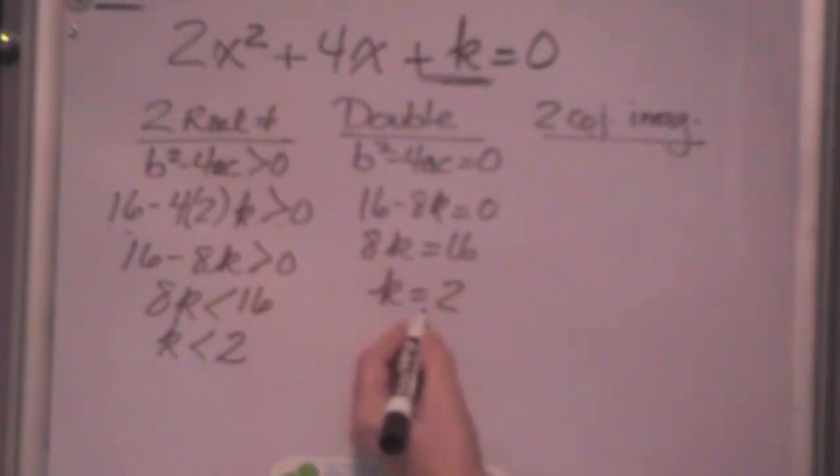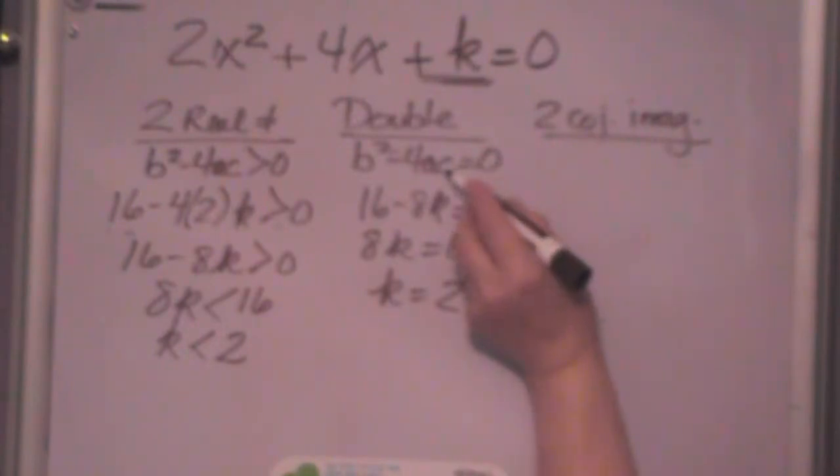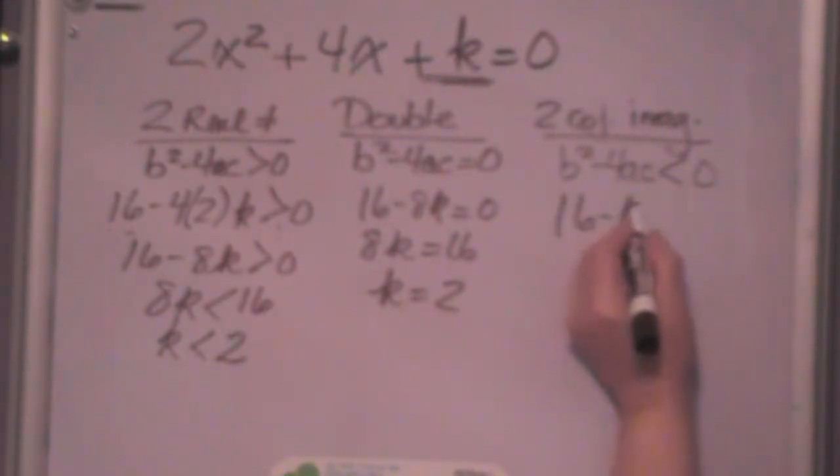Do I have less than 2? Equal to 2? What do you suppose it's going to be over here? I got a feeling it's going to be greater than 2, but let's figure it out. To have imaginary roots, this has got to be less than zero. b squared minus 4ac is less than zero. So that means 16 minus 8k is less than zero. So that means that 8k is greater than 16 and k is greater than 2. So those are the values that you would have for k. Anything greater than 2 gives you imaginary roots.